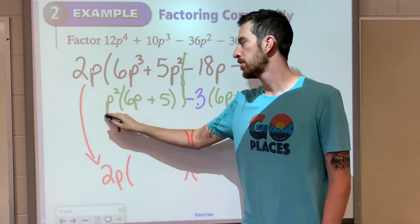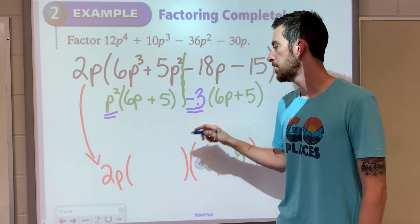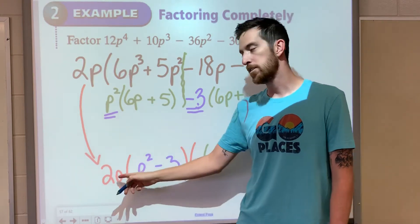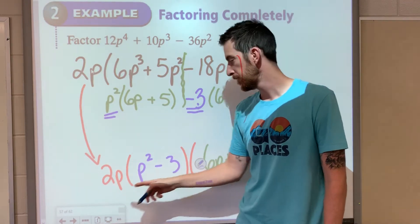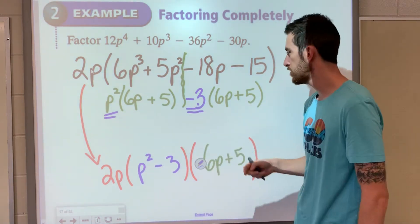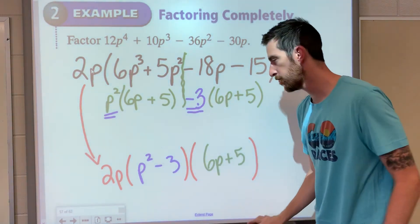So we have the 2p greatest common factor. We've got the p squared minus 3 here. And then the 6p plus 5 is from the two sets of parentheses.